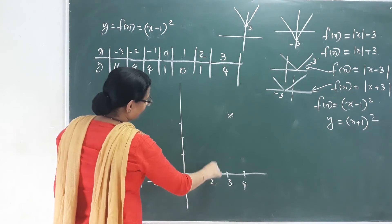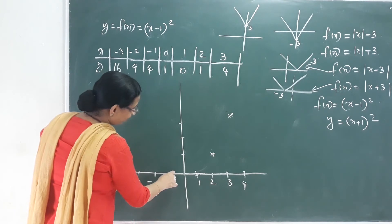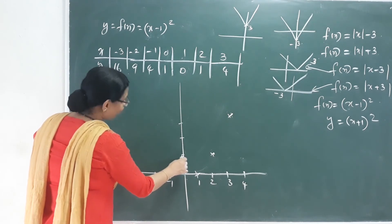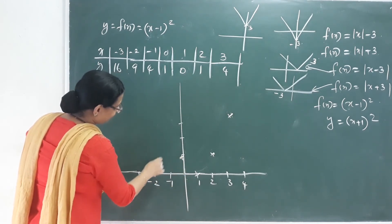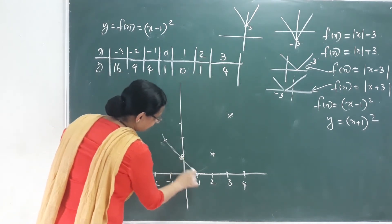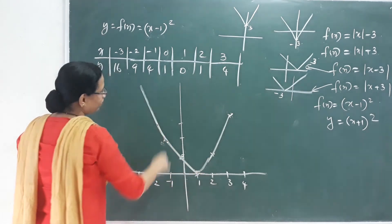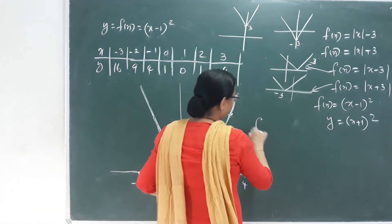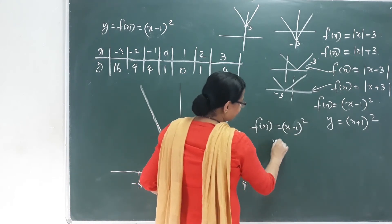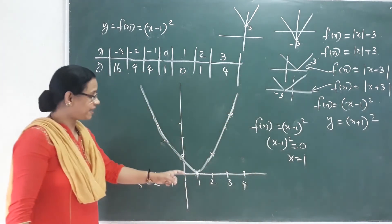Let's look at this graph together. x equals 2 gives 1, x equals 1 gives 0, x equals 0 gives 1, negative 1 gives 4. There is a U-shaped graph — that is equal to a 2nd degree equation, because of the graph f of x equals x minus 1 whole square. That means x minus 1 whole square equals 0, so x equals 1. Now we have a vertex on the x-axis.